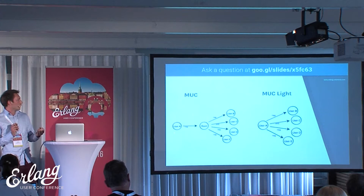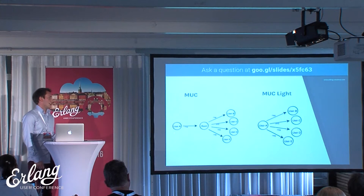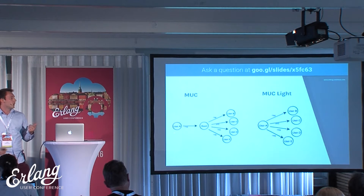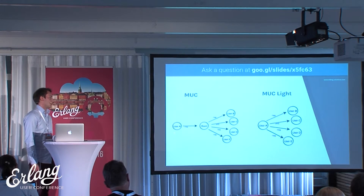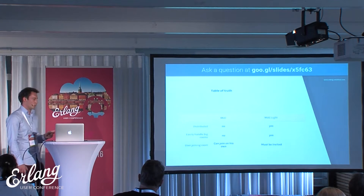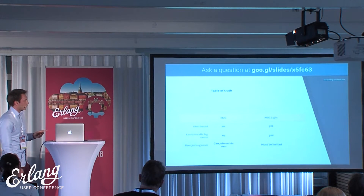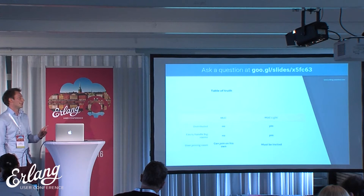Additionally, we changed message routing in our server. In MongooseIM architecture, we represent every connection by a process. When one user talks to another, we just send an Erlang message. In the old multi-user chat implementation, there was an additional process for the room — it took messages from every occupant and sent them to other members, creating a bottleneck. We got rid of this additional process and now send messages in the context of the user. This gives better support for distribution in our MongooseIM cluster and better handling of big rooms, because in old implementations we had spikes of latency when measuring time-to-delivery.